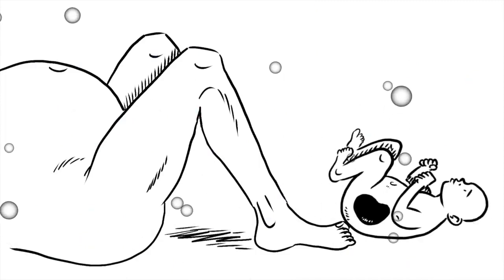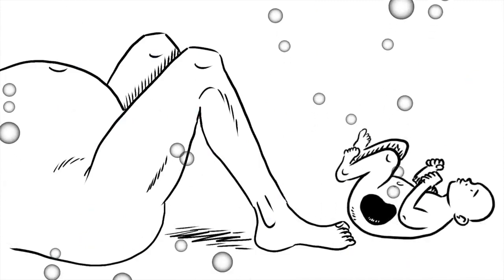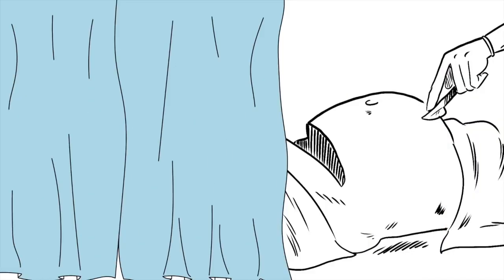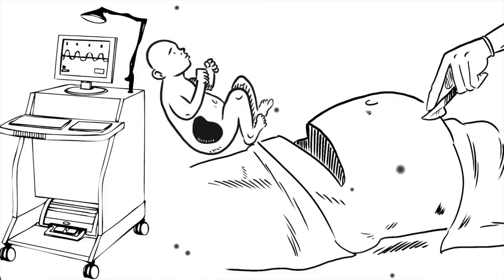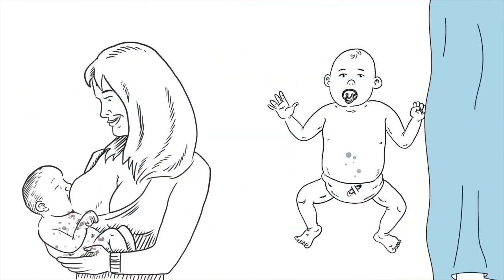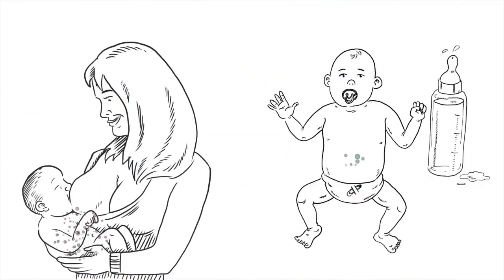Babies born naturally come into contact with microbes found in the mother's intestinal and vaginal fluids. Whereas in a caesarean birth, babies tend to be colonized by microbes typically found on the skin and in hospitals. Similarly, breastfed babies will have a different microbiota profile than formula-fed babies.